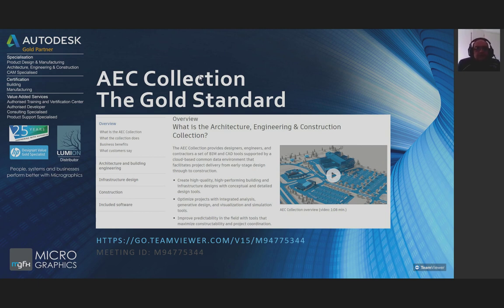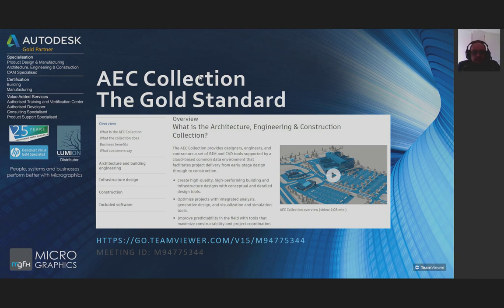What is the architecture, engineering and construction collection? For most of you that are in the industry, one would typically use one product. You might purchase a Revit license if you're an architect, or you might be a civil engineer using Civil 3D or InfraWorks or any one of the many products that Autodesk has. What they did was say, let's give a user a license that contains many products applicable to the architecture, engineering and construction sector of the economy.